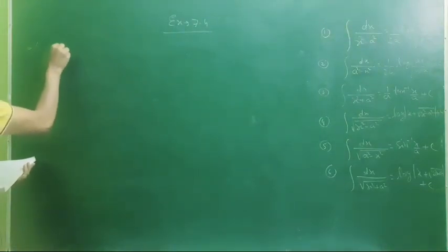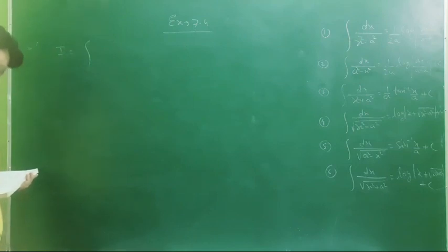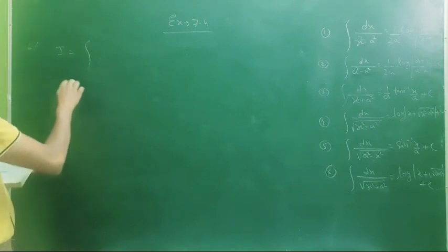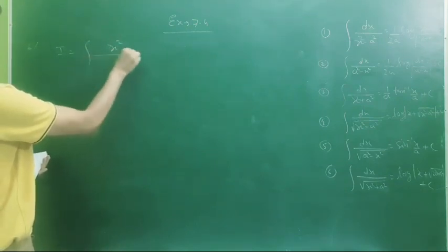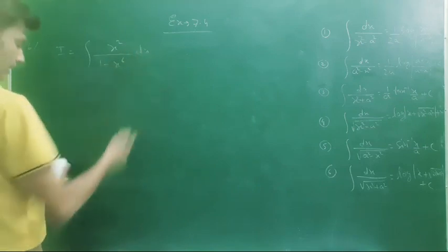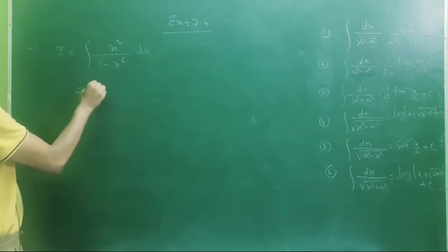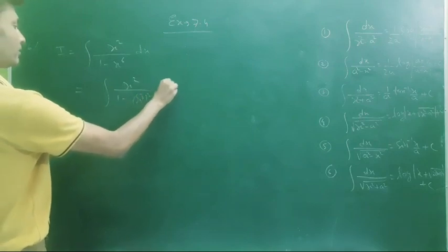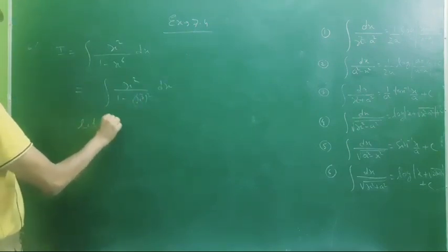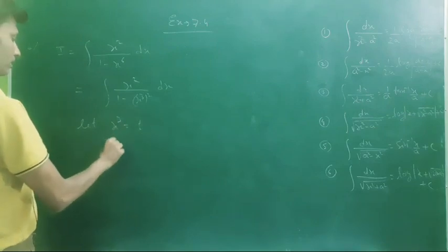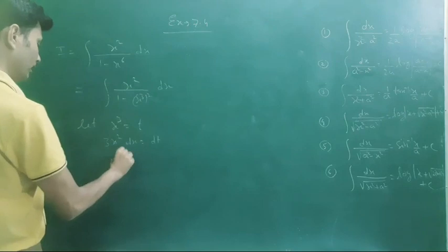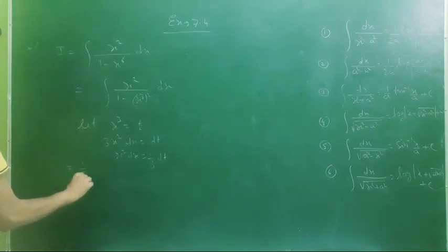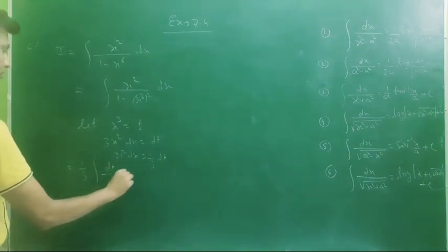Question number six: integrate x squared divided by (1 minus x to the power 6) dx. Rewrite as integral of x squared over (1 minus (x cubed) squared) dx. Let x cubed equal t, so 3x squared dx equals dt, meaning x squared dx equals one-third dt. Replacing, we get one-third times integral of dt over (1 minus t squared).